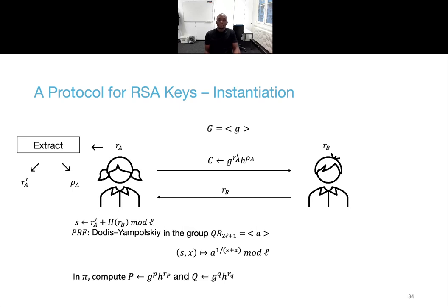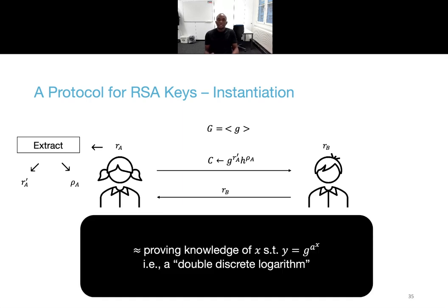In the proof of correct computation, Alice commits to P and Q with again Pedersen's scheme in G. And since she must prove that these committed values are the outputs of the PRF on the seed S, she essentially has to prove that she knows the value X such that the public value Y is equal to g to the A to the X. Or in other words, the double discrete logarithm.